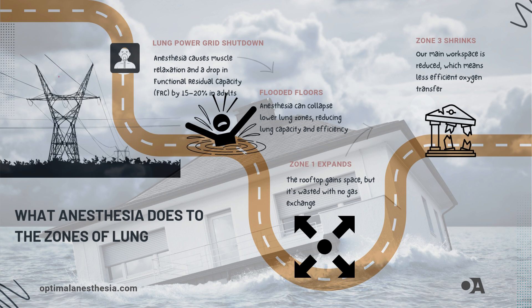Now let's talk about how anesthesia shakes things up in this four-story building of ours. When we give anesthesia, it's like the building's electricity shuts down — muscles relax and the structure sags. This leads to a drop in functional residual capacity, FRC, by about 15-20% in adults. Imagine the lower floors getting flooded, collapsing some rooms, and reducing overall lung capacity.